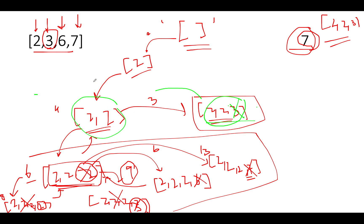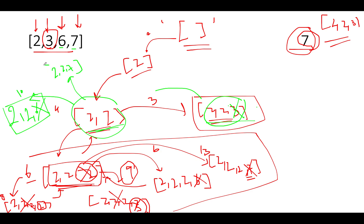From [2, 2], we try 6 next: [2, 2, 6] gives a sum of 10, greater than 7 — invalid, so we backtrack. Then we try 7: [2, 2, 7] gives a sum of 11 — also invalid, so we backtrack again. We've now iterated through all possibilities for [2, 2]. We delete the last 2 and return to the state [2].